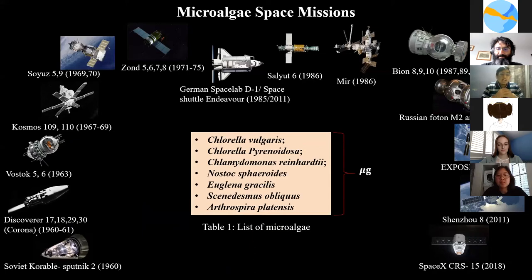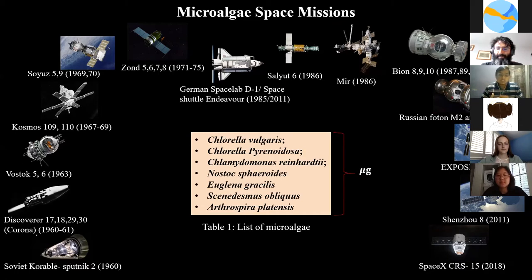I analyzed 58 years of microalgae experiments conducted in different space missions, from Sputnik 2 to SpaceX CRS-15. They have shown that some microalgae can survive in space conditions, especially Chlorella vulgaris, Chlorella pyranodosa, Chlamydomonas reinhardtii, Nostoc sphaeroides, Euglena gracilis, Scenedesmus obliquus, and Arthrospira platensis.